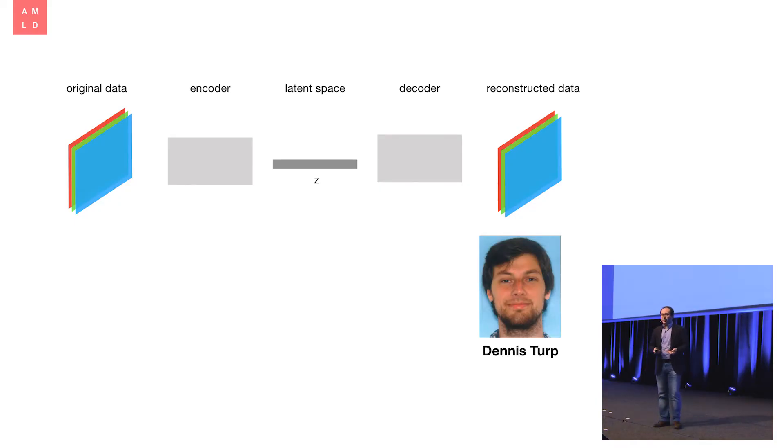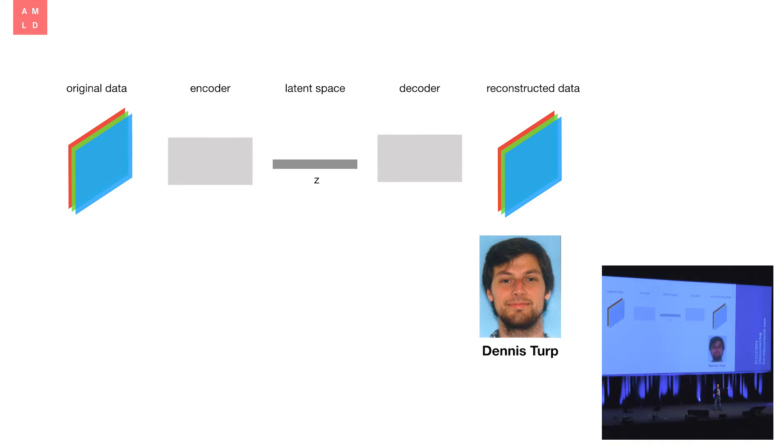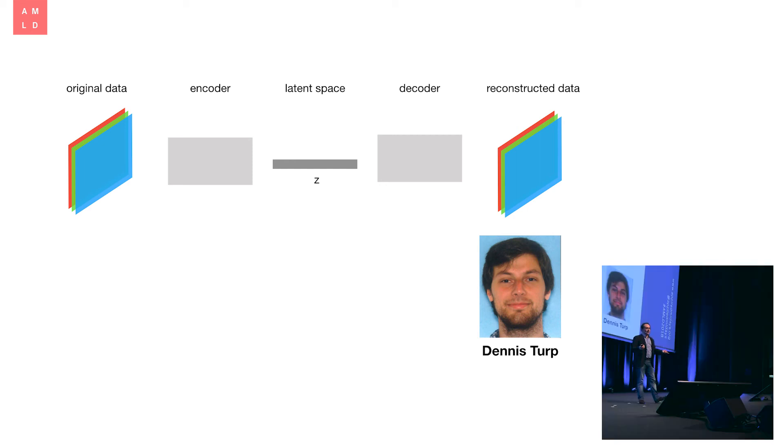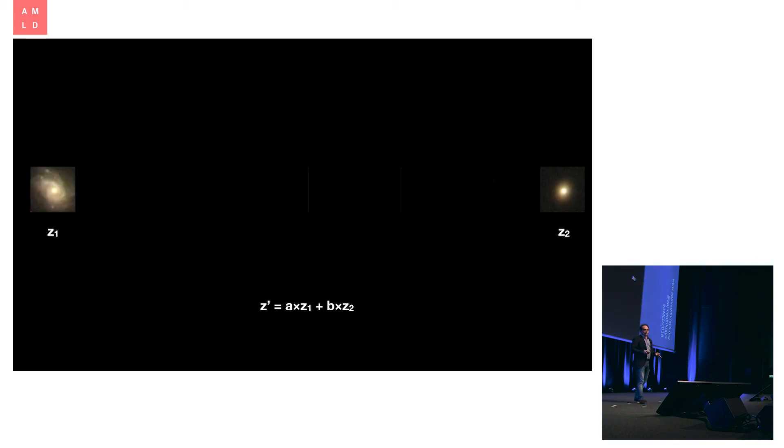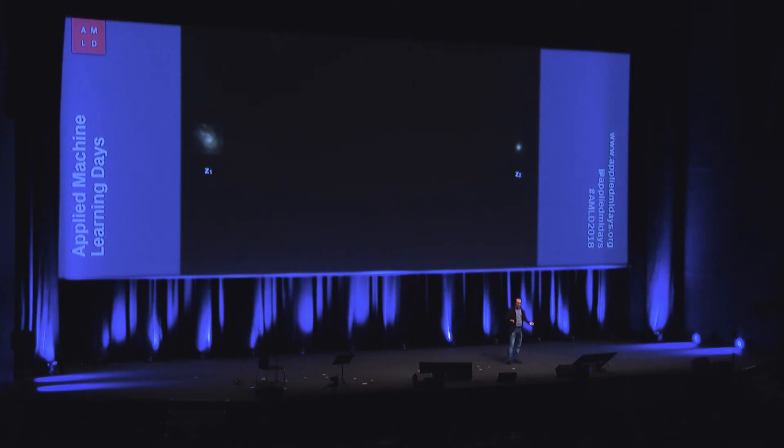This is what we did. We started with an autoencoder architecture. This is work led by Dennis Torp, who's also here. We used an autoencoder structure to abstract images of galaxies and manipulate them in latent space. Here are two galaxies, two archetypical types. The one on the left is a spiral galaxy like our Milky Way. The one on the right is an elliptical galaxy, very different but also very common. We encoded these two galaxies and did a linear combination in latent space to evolve from state one to state two.